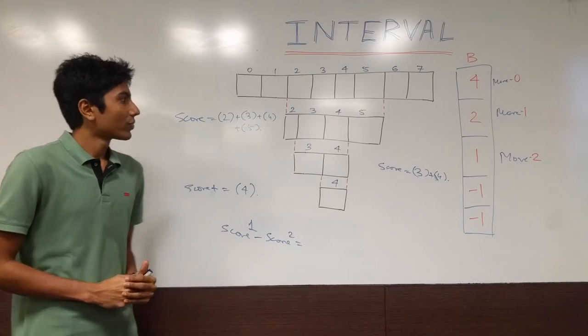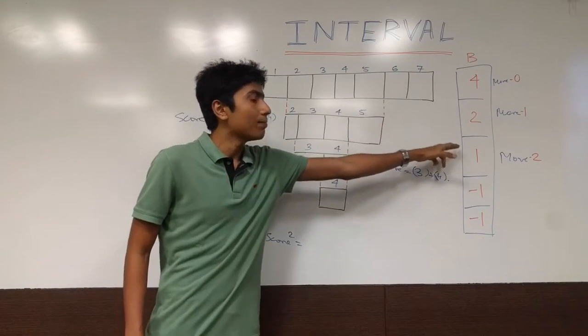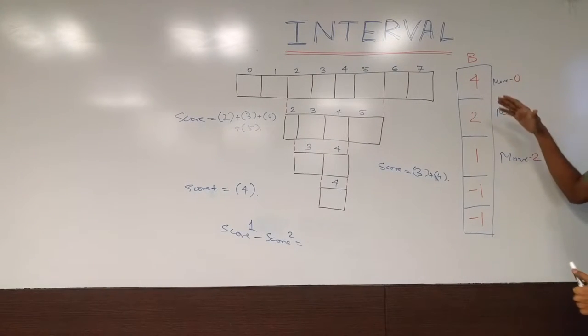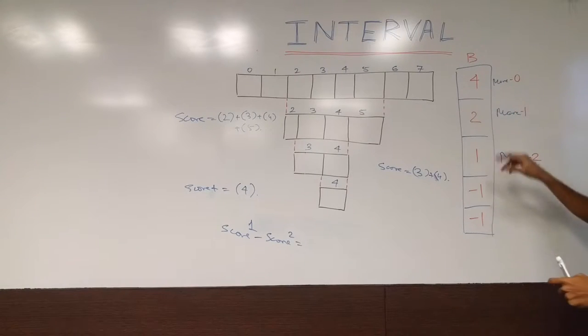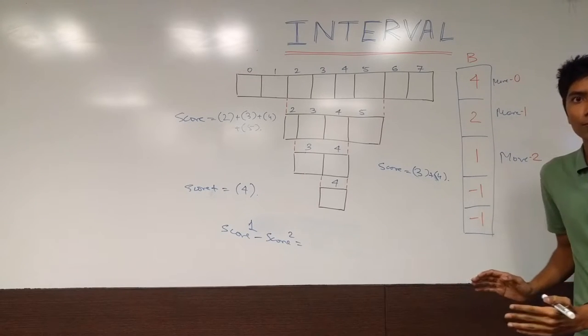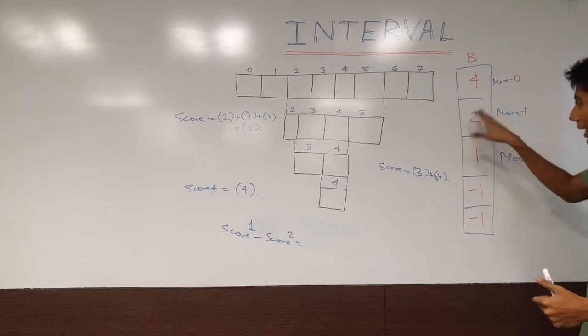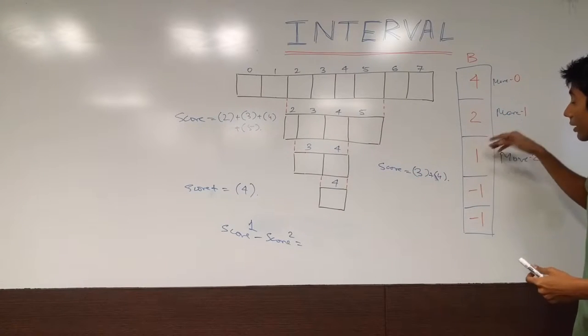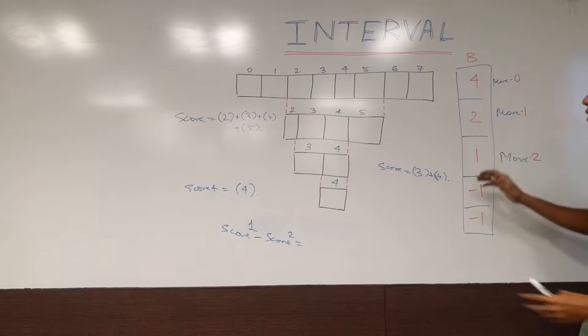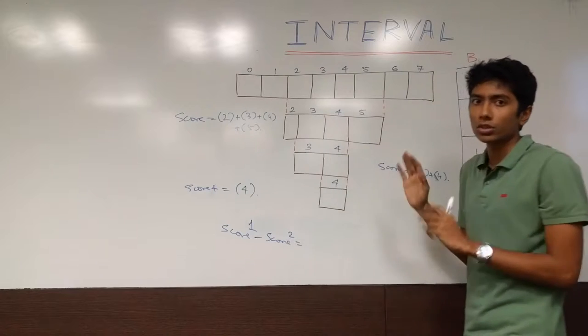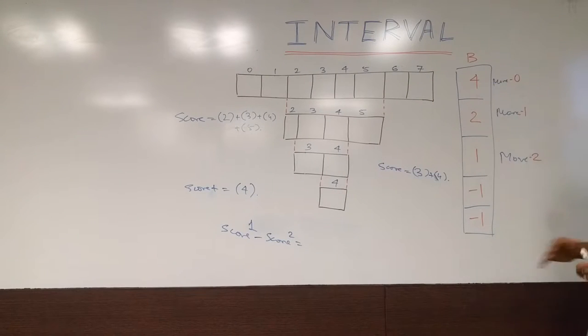There is one more constraint though. In the input, you are given an array b. So b defines the kind of moves that you can make. On the very first move that you need to make, you are given b which is the size of the range that you have to choose. There is a guarantee that b of 0 or any b of any i is going to be less than b of i-1 because from that sub range you are going to be choosing lesser and lesser.